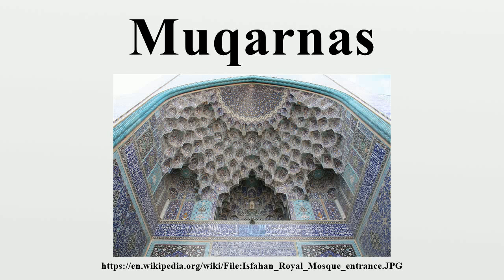The mukhanas is a form of architectural ornamented vaulting, the geometric subdivision of a squinch, or cupola, or corbel, into a large number of miniature squinches, producing a sort of cellular structure, sometimes also called 'honeycomb' vaults from their resemblance to these.